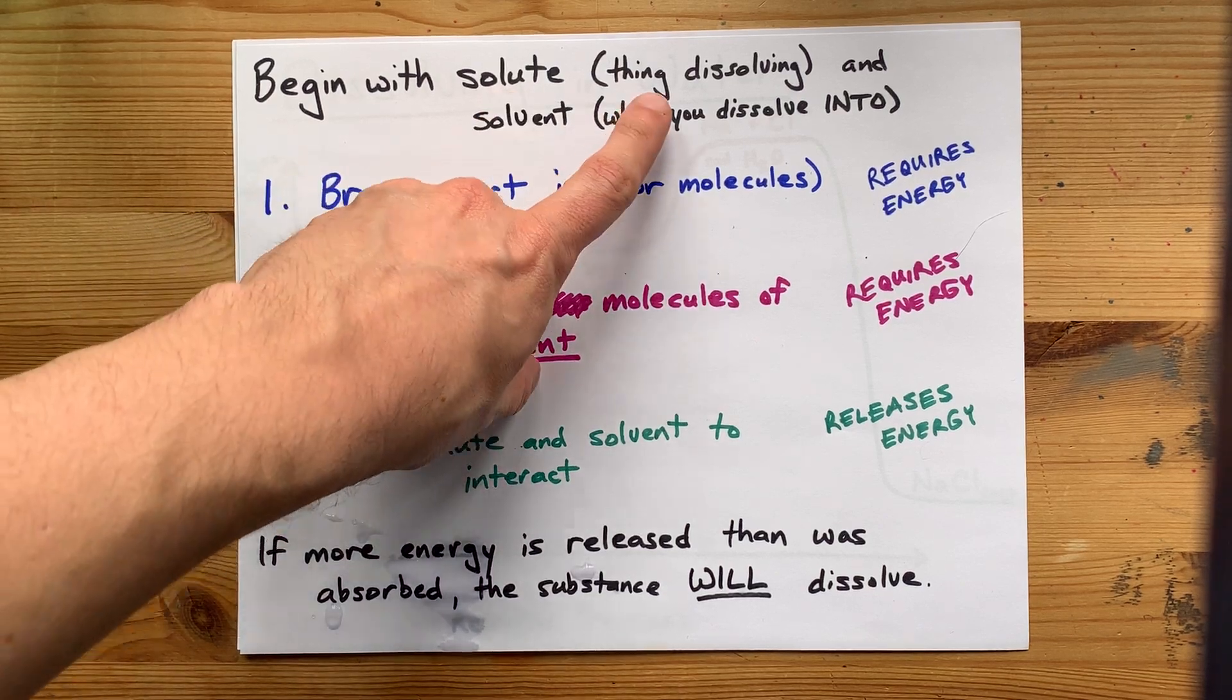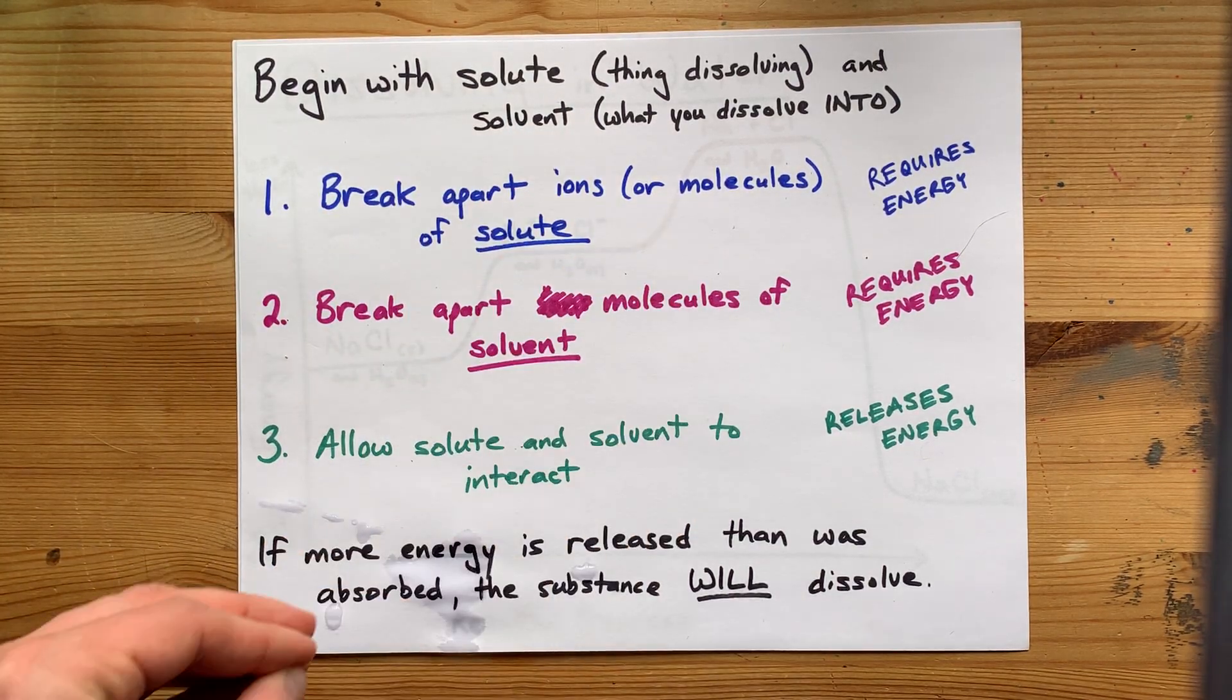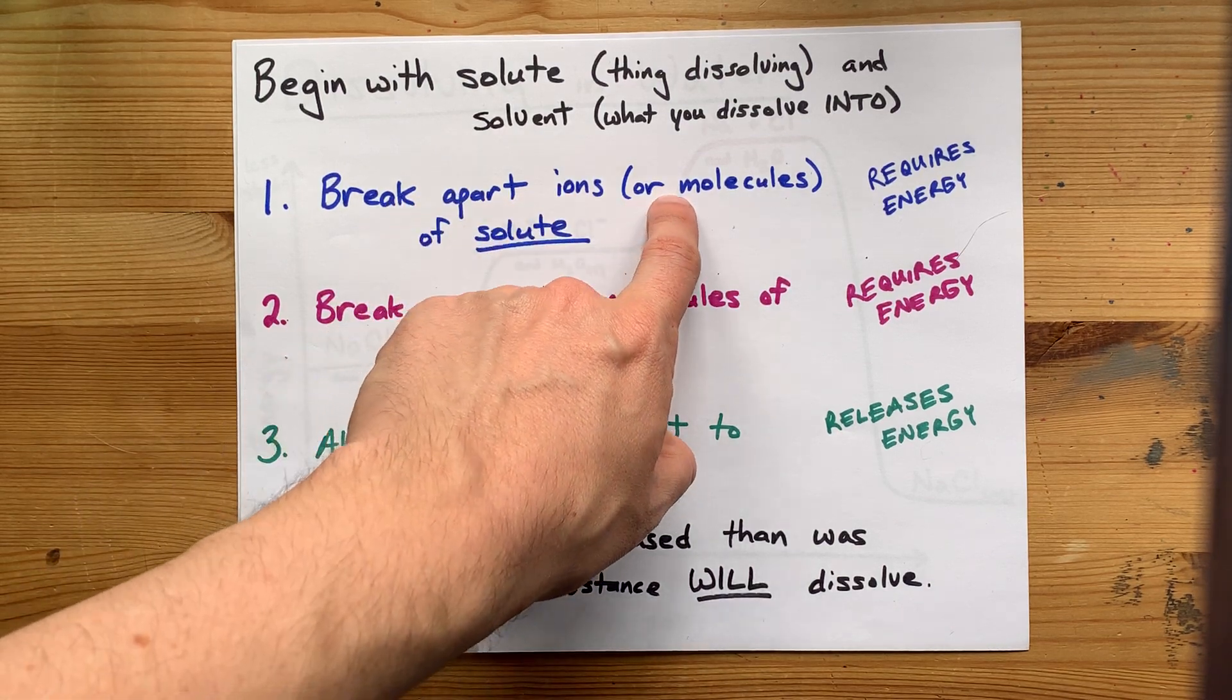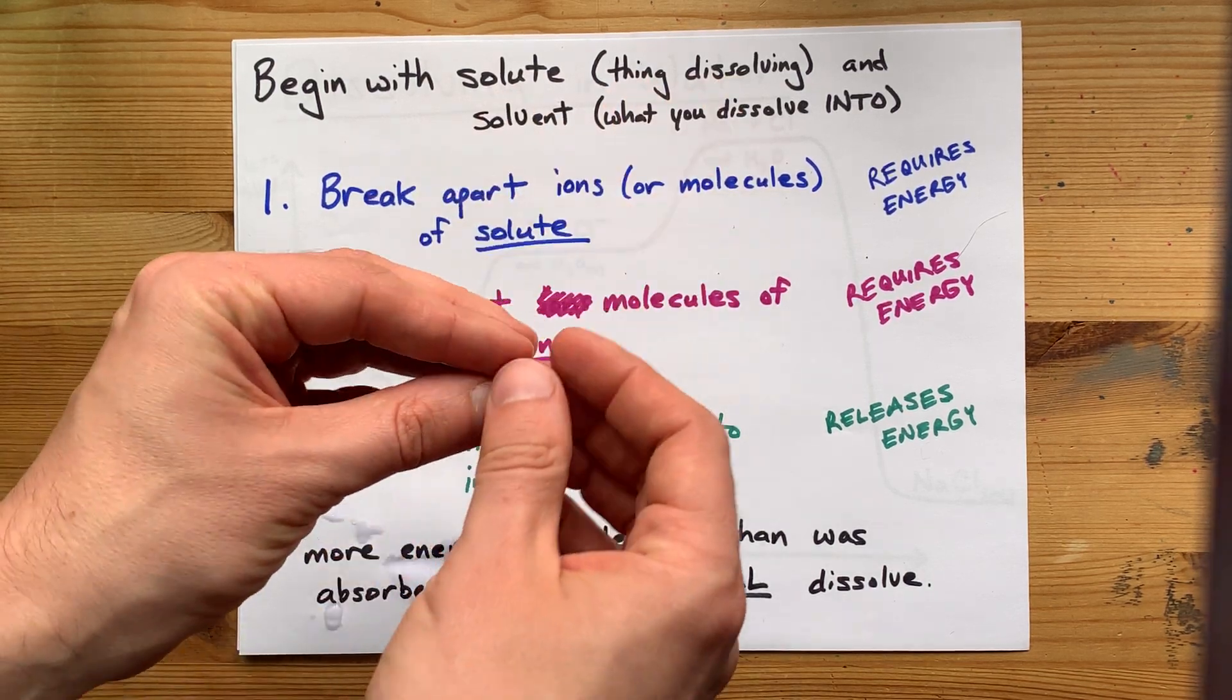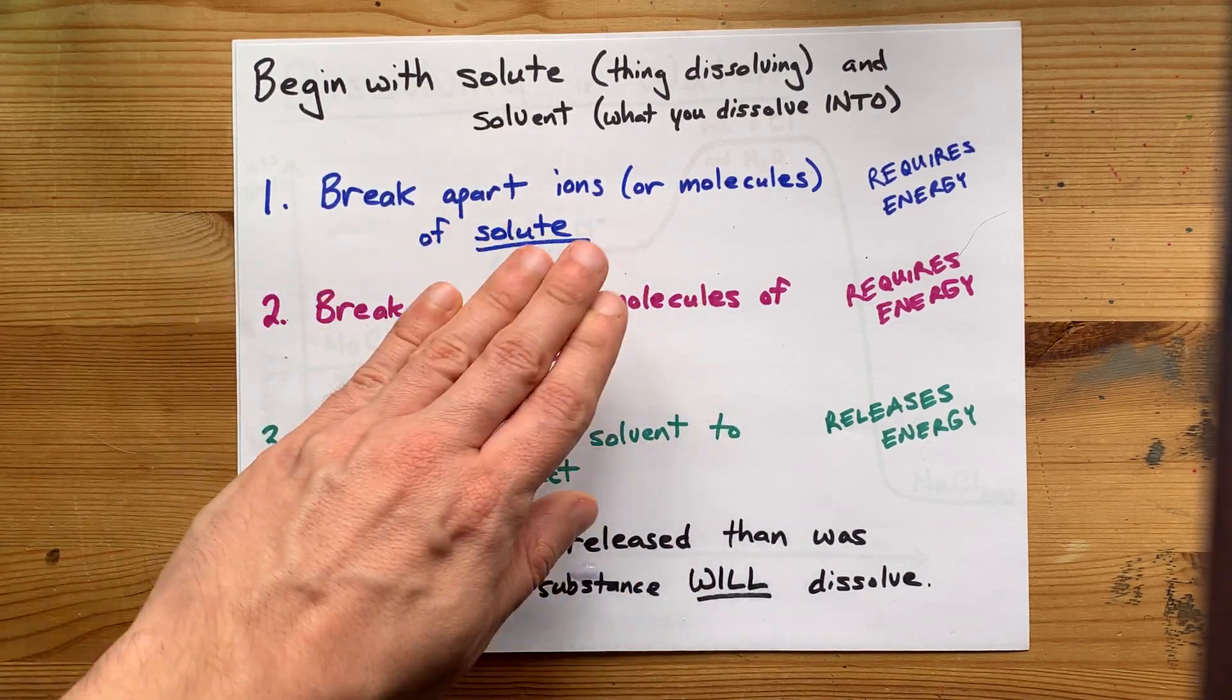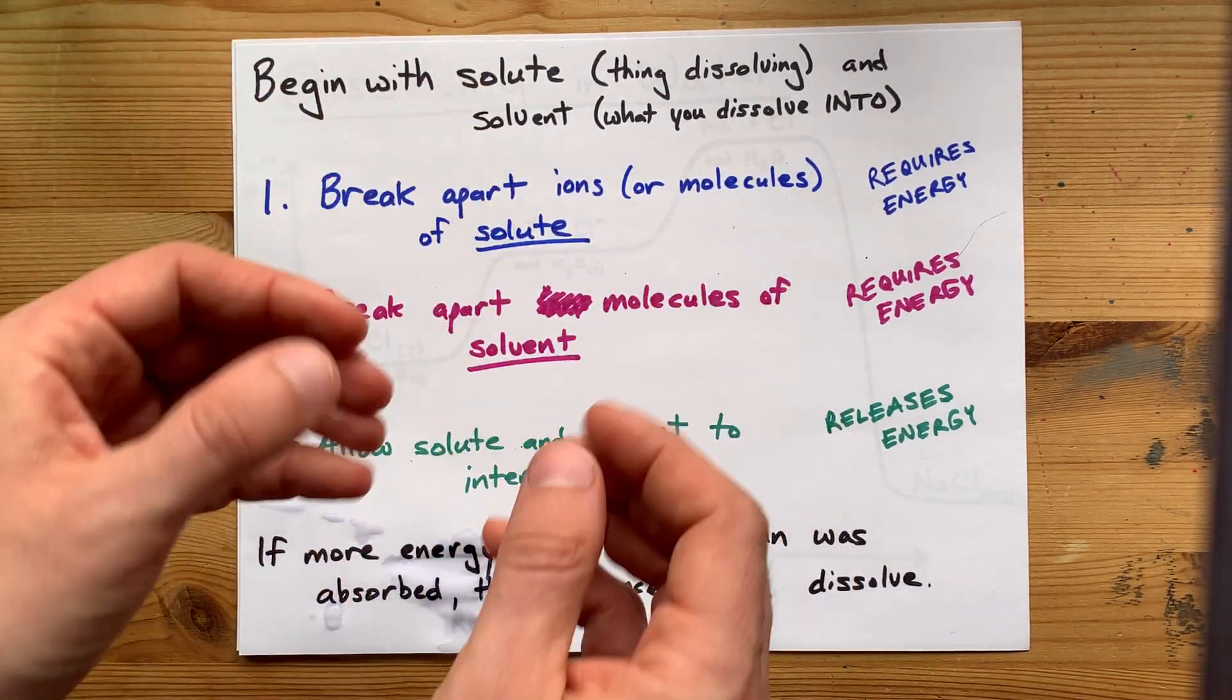So, you're going to begin with a solute—that's the thing that is dissolving into another—and you're going to begin with a pure solvent, which is what you're going to dissolve into. Now, the process of getting those two substances to mix comes in three parts. The first is that we break apart the molecules, or in some cases, ions, of the solute. The thing you are trying to dissolve needs to be broken up into tiny, tiny pieces, almost as small as they can go, so that they can spread themselves around the solvent.